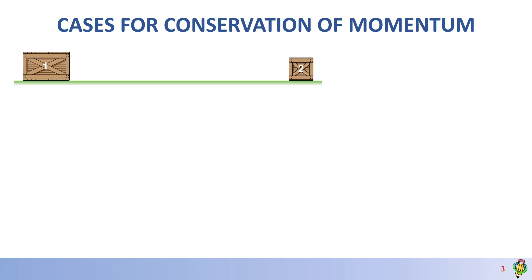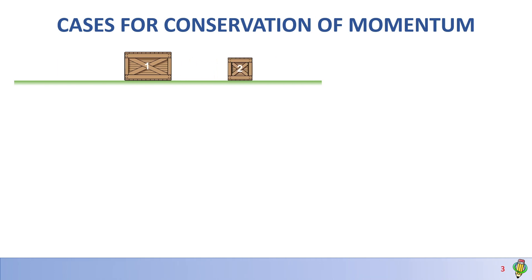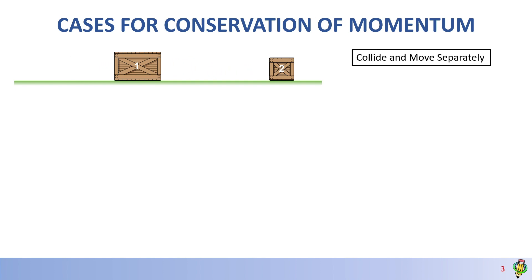We will consider the collision between block 1 and block 2. These two blocks were moving at different velocities, then they collide and continue to move separately. We express the conservation of linear momentum equation for those two objects. Since they collide and move separately, the equation is: M1·V1_initial + M2·V2_initial = M1·V1_final + M2·V2_final, where each object has its own initial and final velocity.